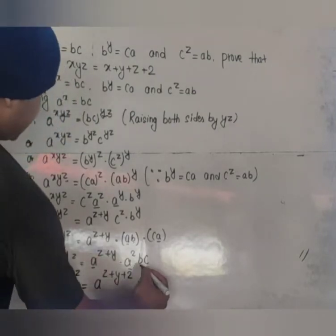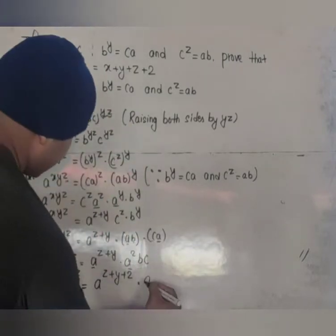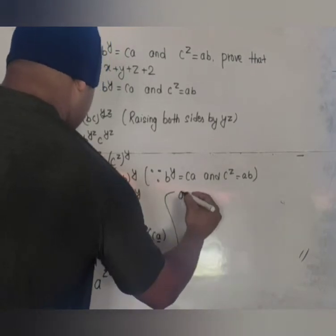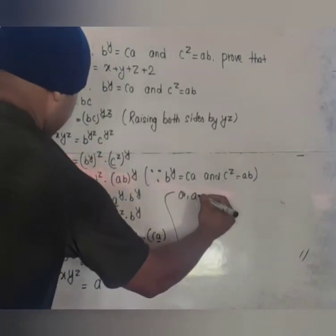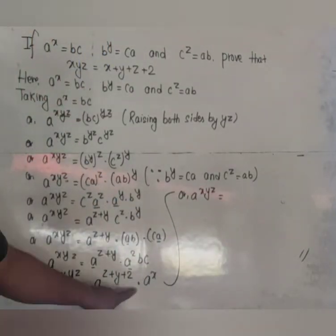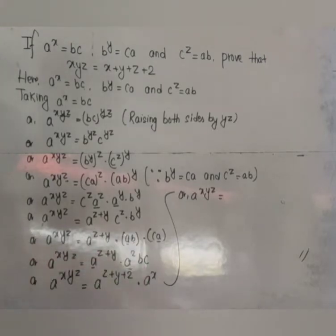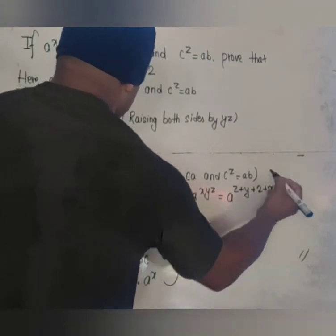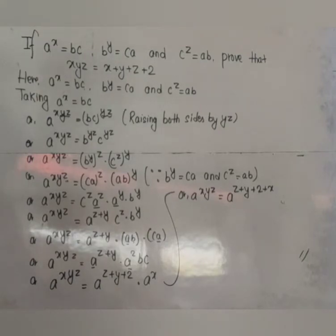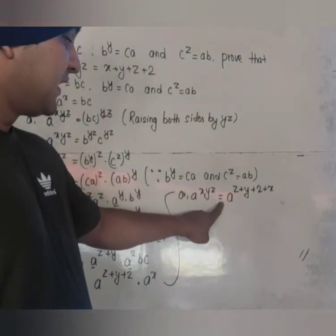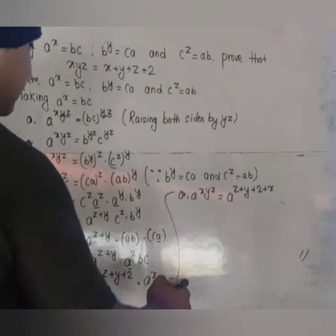Now bc equals a^x, so we can substitute. We have a^(xyz) = a^(z + y + 2) · a^x. Applying the same rule — same base, being multiplied, so add exponents — we get a^(xyz) = a^(x + y + z + 2). Since the bases are equal and there is an equals sign, the exponents must be equal, so xyz = x + y + z + 2. Proved.